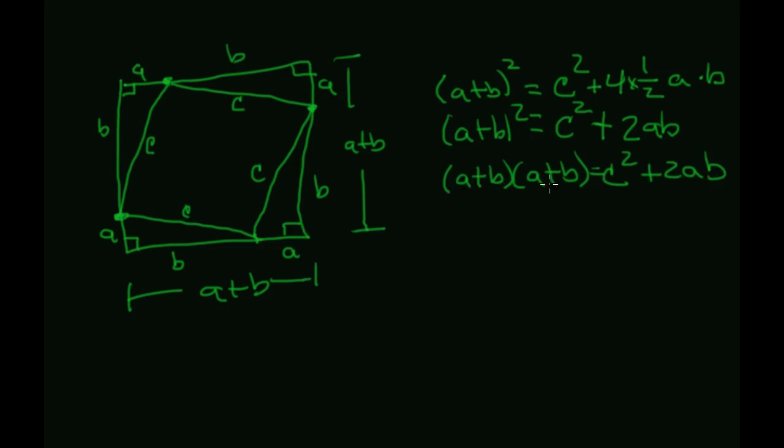So we're going to do binomial multiplication here. So that's A squared plus the outers, A, B, plus the inners, A, B, plus the last, B squared, is equal to C squared plus two A, B.